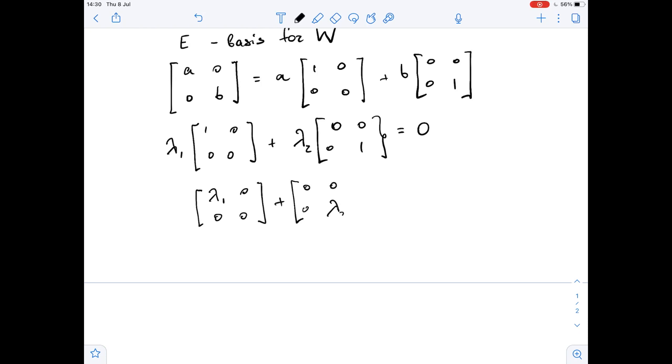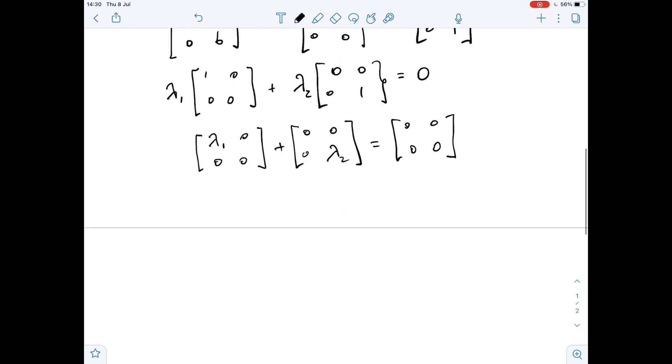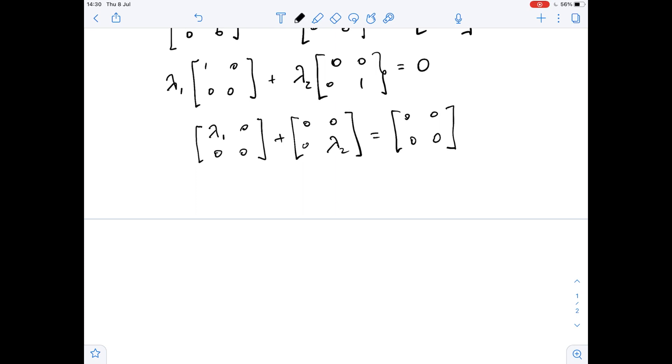Then by doing the multiplication by scalar, we get lambda_1 [0 0; 0 0] plus [0 0; 0 lambda_2] equals the zero matrix. After adding the matrices on the left side, we get [lambda_1 0; 0 lambda_2] equals the zero matrix.